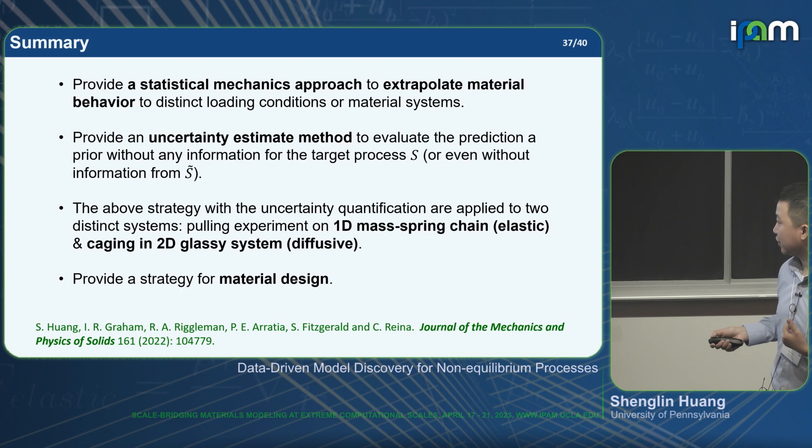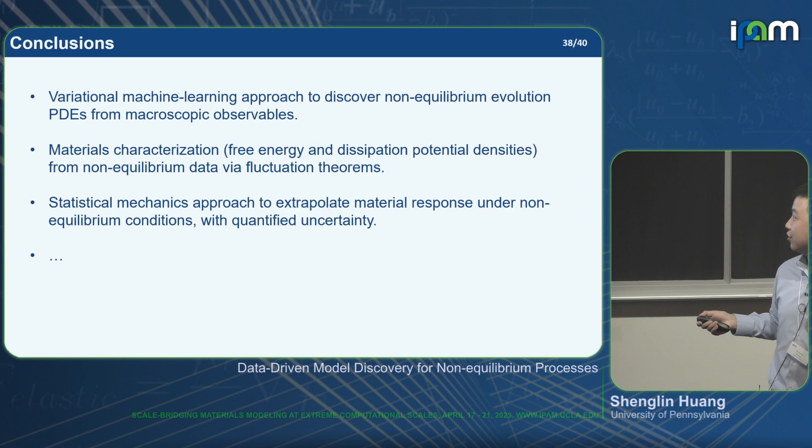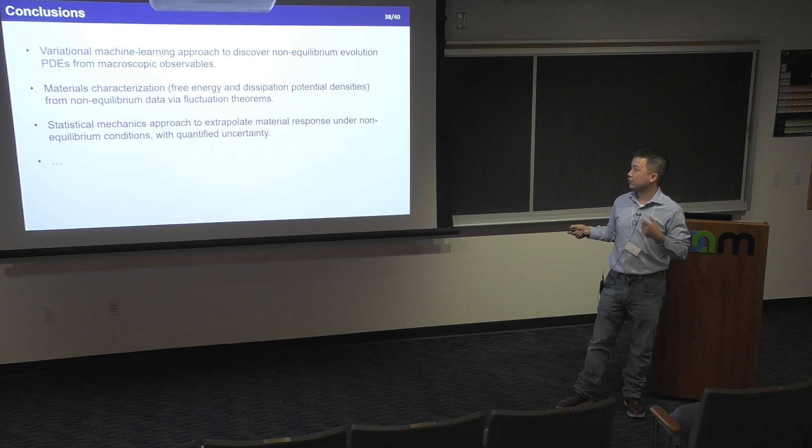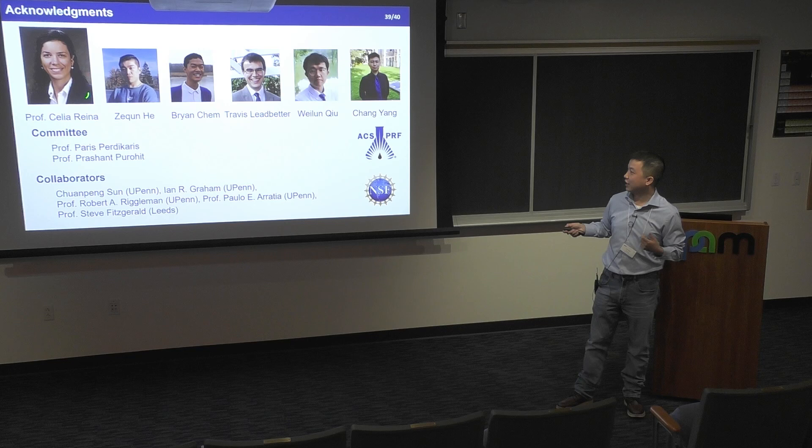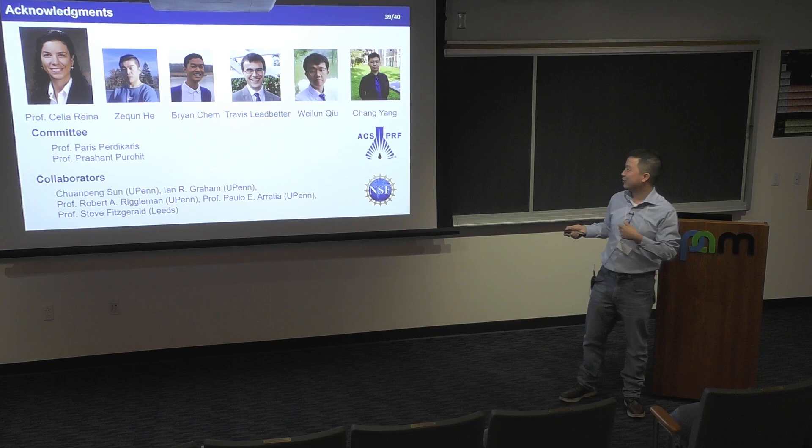This work was also published in JMPS last year. In conclusion, I showed three works: using machine learning to learn non-equilibrium PDEs; using the Jarzynski relation and fluctuations to capture material response; and using a statistical mechanics approach to extrapolate material behaviors. I want to acknowledge my advisor Celia Reyna — who is not here today — all my collaborators, and my PhD committee. Thank you so much.